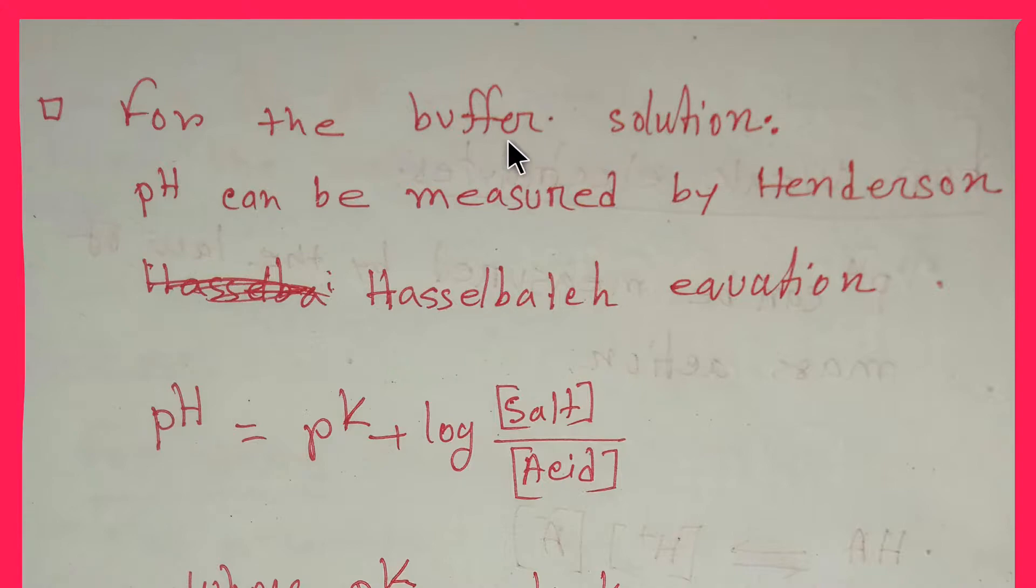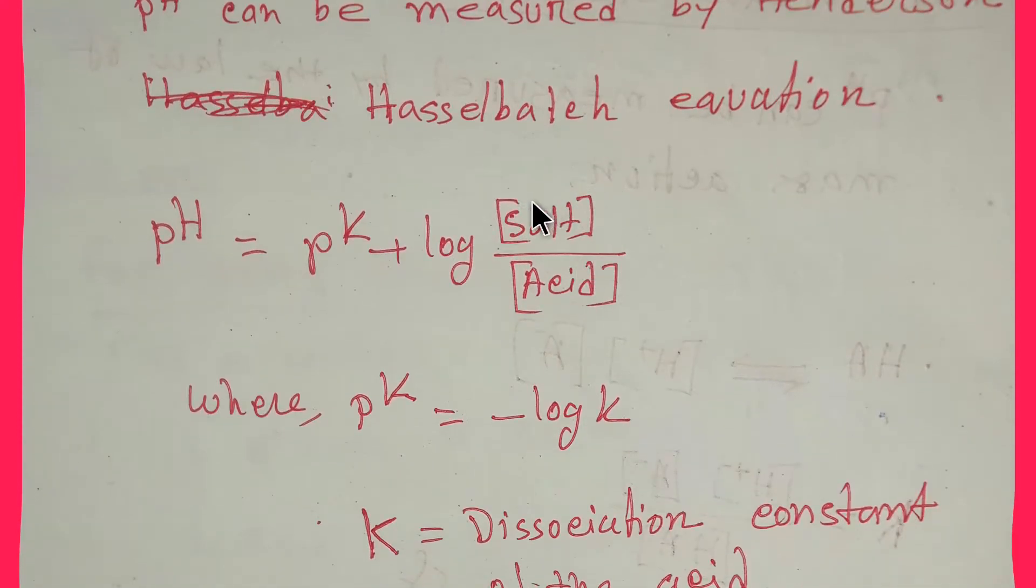And the pH of such kind of solution is measured by Henderson-Hasselbalch equation. So what is that equation? pH equals pKa plus log concentration of salt divided by concentration of acid. Here, remember the concentration of salt will be HA minus.